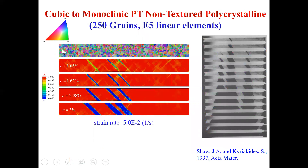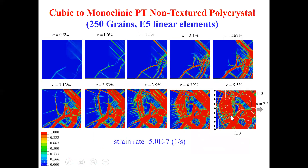This is a different problem — a polycrystal with 250 grains. You see very small grains for such a sample, and you see nucleation and growth of martensitic bands. The bands don't seem to feel the grain structure, and that is what is observed in experiments. With a much lower strain rate, the microstructure at each step is much more relaxed and equilibrated. We reproduce very fine microstructure similar to what we do in the traditional nanoscale approach.